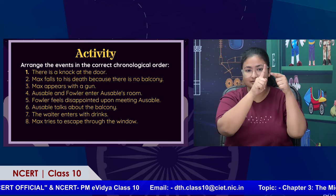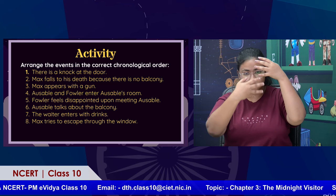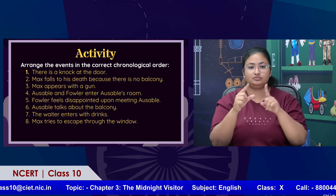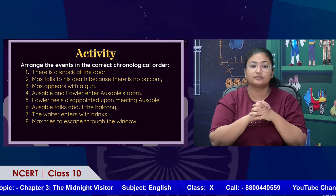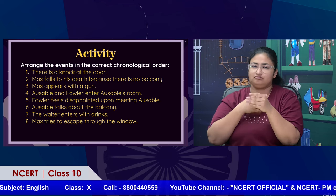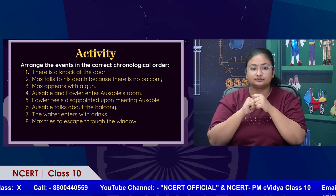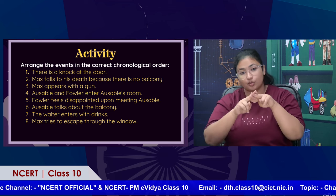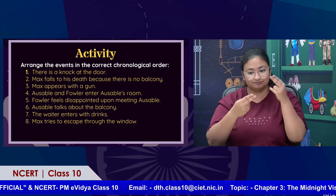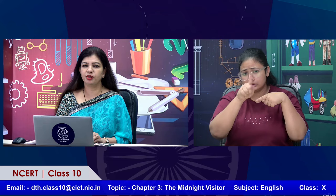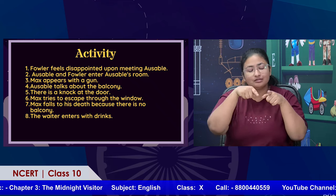Students, I have given you a jumbled list of sentences — let's put the story in order. What is the first thing that happens? Fowler feels disappointed upon meeting Ausable. After that, Ausable and Fowler enter Ausable's room. Then Max appears with a gun. Students, take a screenshot and practice it. The answers are only for you to check after you have tried it yourself.